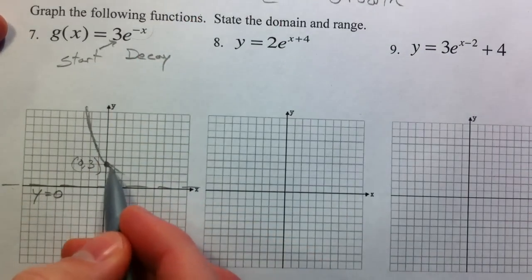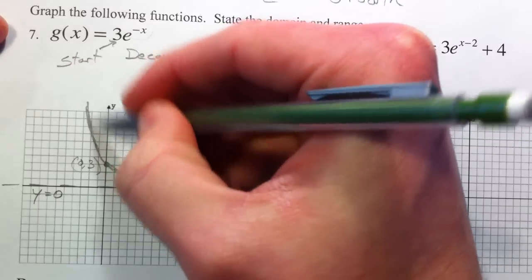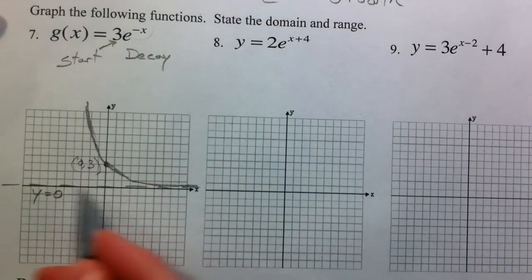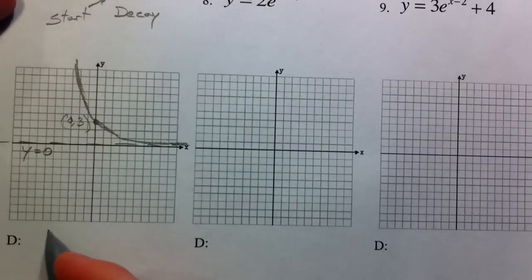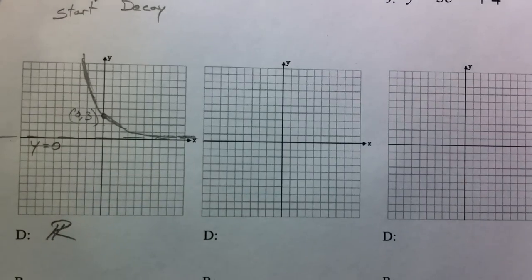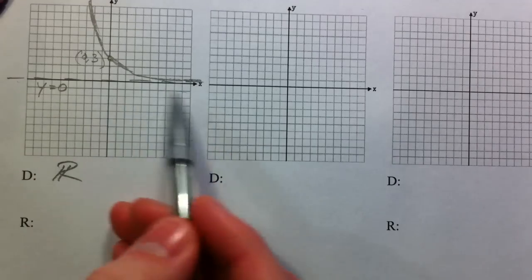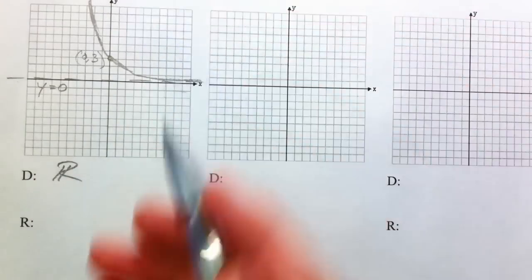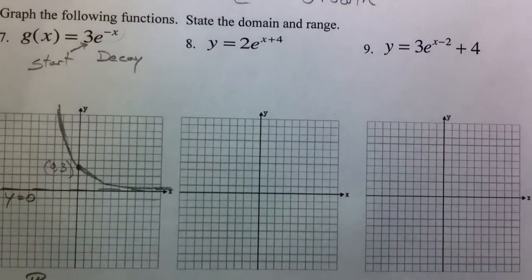I'm interested in more that you realize that it's decay, more that you know where it starts and the asymptote. The domain for this one is all real numbers. It doesn't matter what x is. I can plug anything in. And then the range, all the y values, stay above this point. And so all the y values are greater than 0.